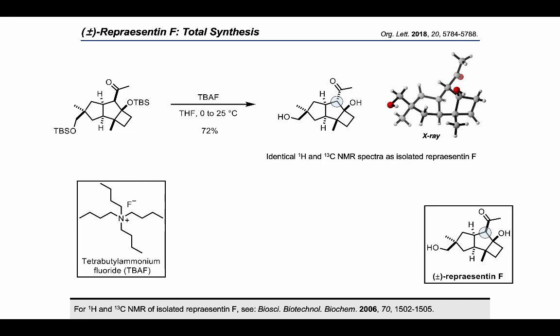The spectroscopic data of our synthetic sample matched well with those reported for the isolated natural product, whose structure was elucidated on the basis of NMR techniques and initially proposed to be the one at the bottom of the slide. The initially proposed structure for representin F is thus epimeric at the ketone alpha position of our synthetic sample.